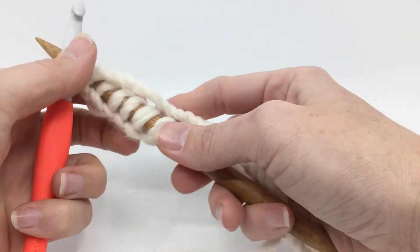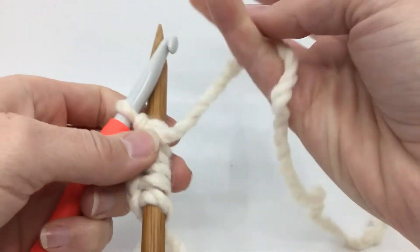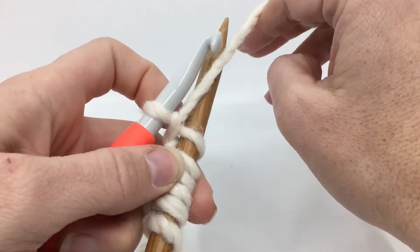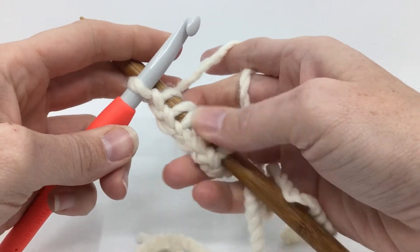Because a lot of times you're going to hear use a long tail cast on, use a knitted cast on, whatever it may be. So you need to know all of them, because sometimes one is better than the other.